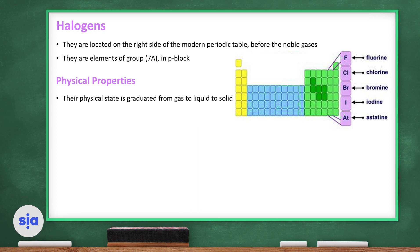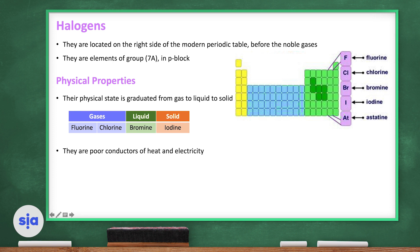Their physical state is graduated from gas to liquid to solid. This means that some of them are gases, some of them are liquids, and some of them are solids. For example, fluorine and chlorine are gases. Bromine is liquid and iodine is solid. They are poor conductors of heat and electricity, not like metals.